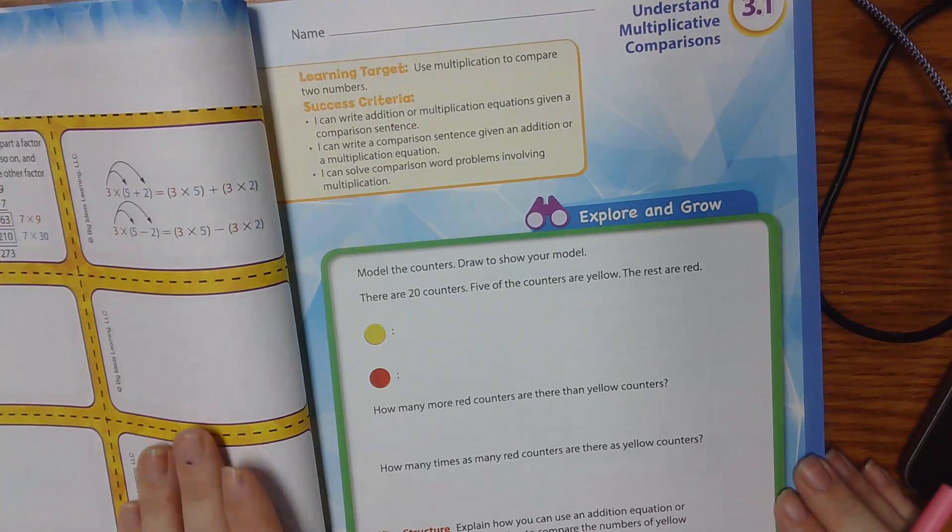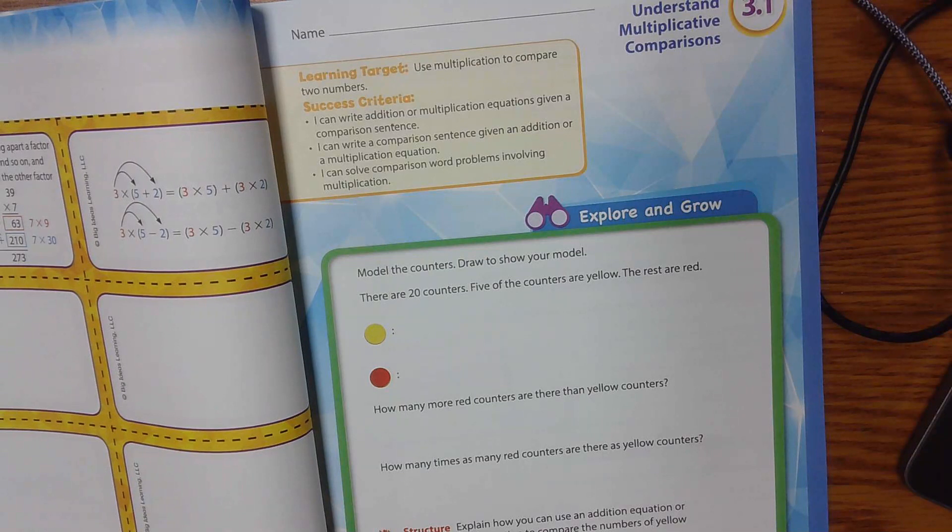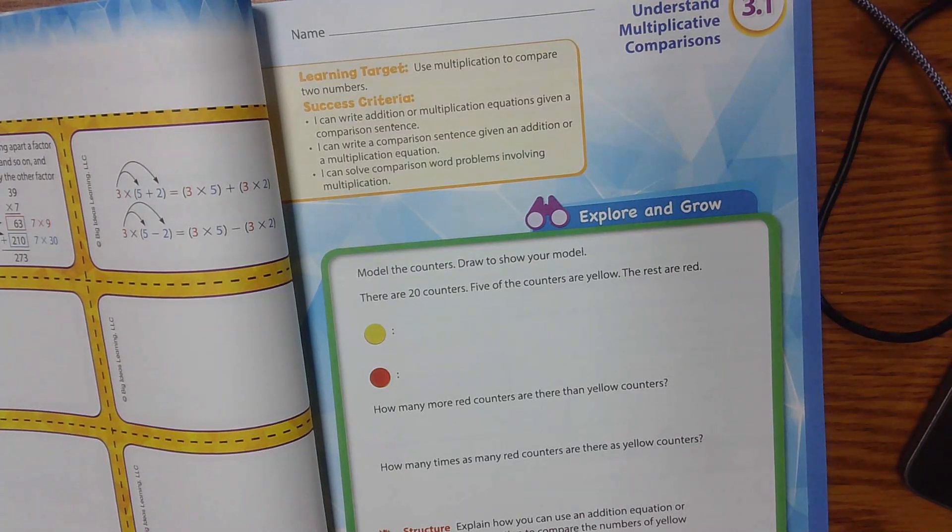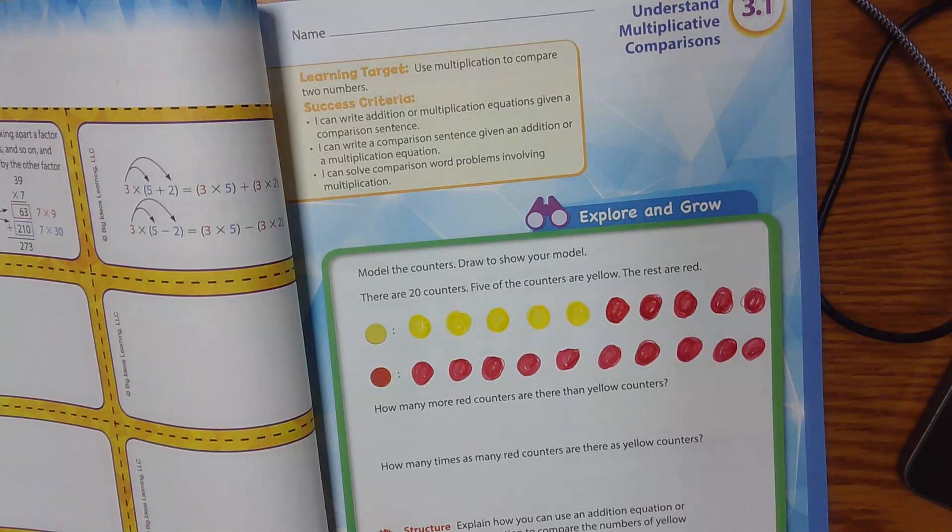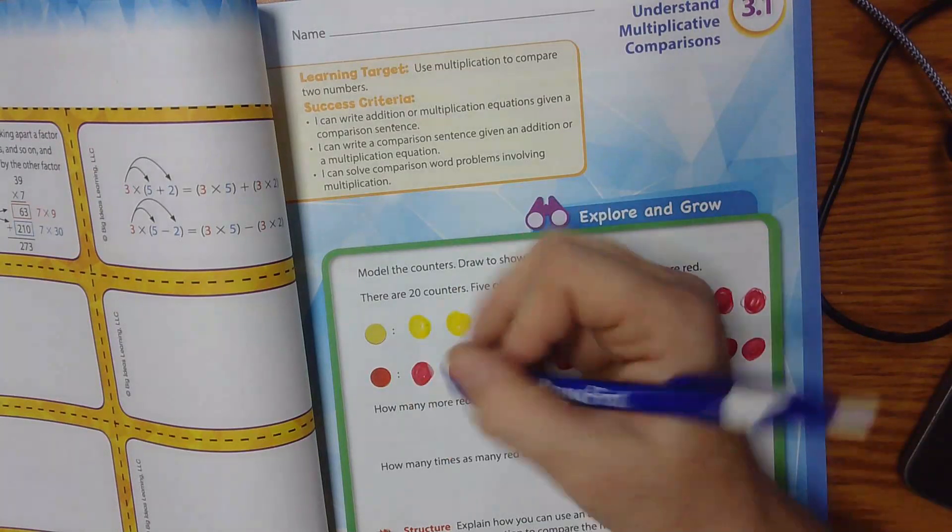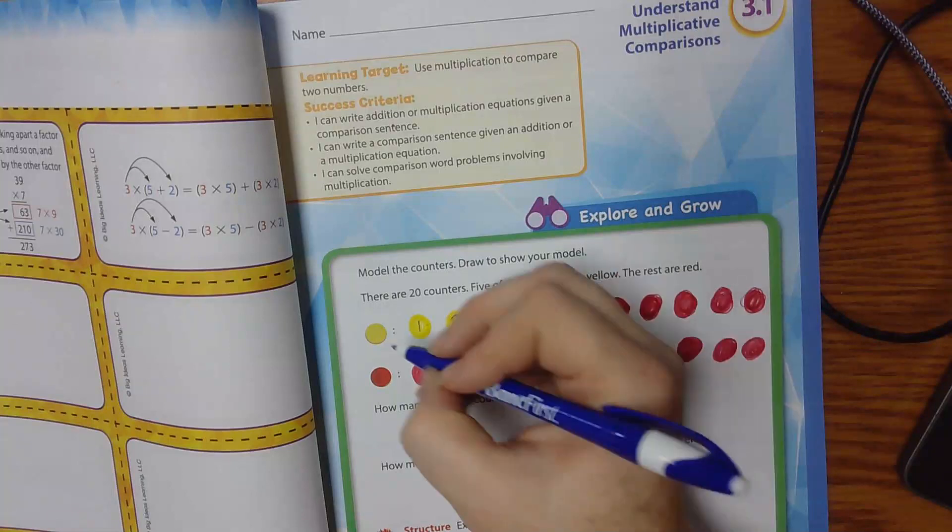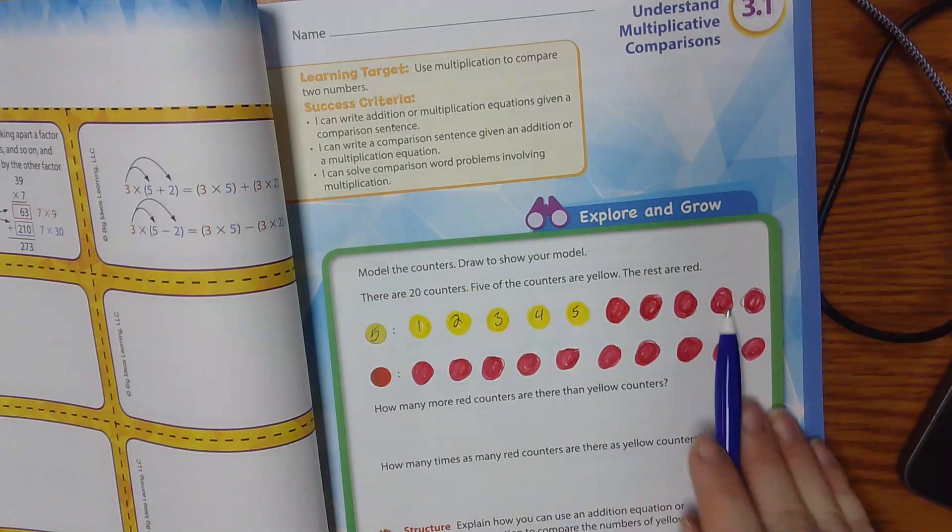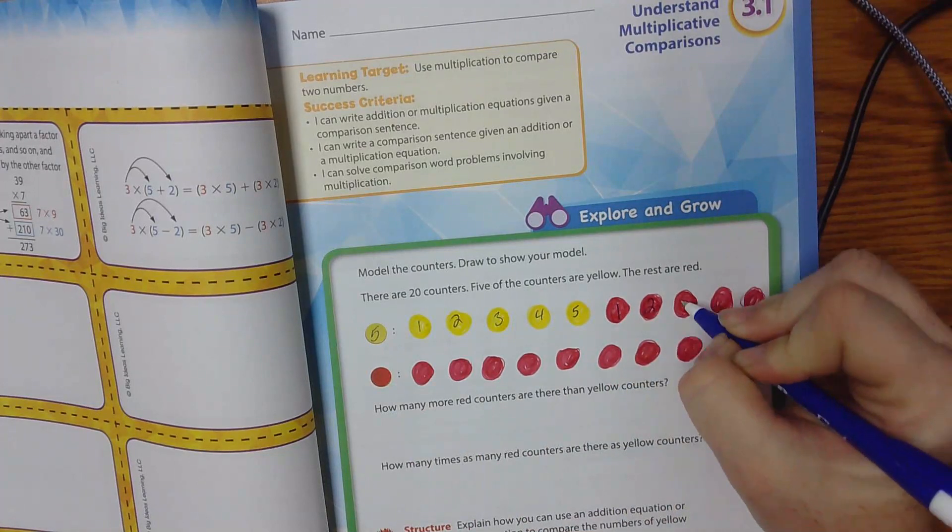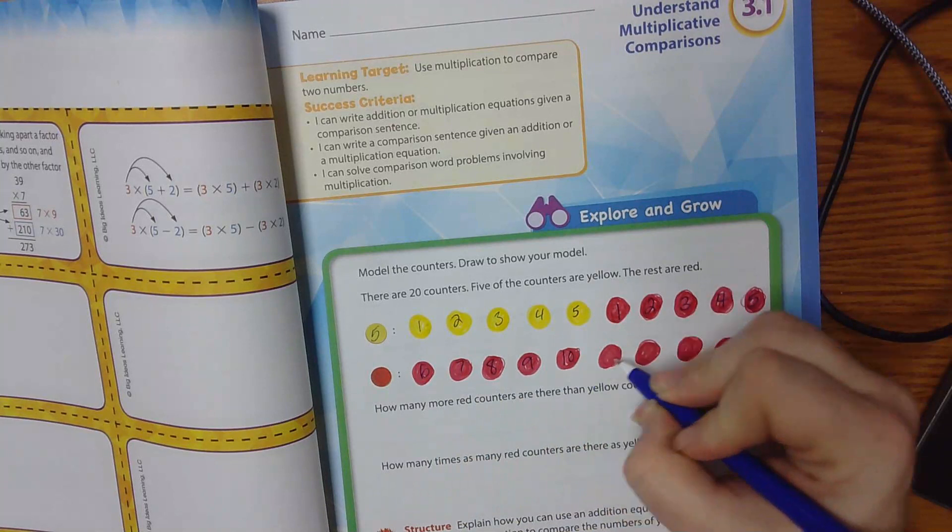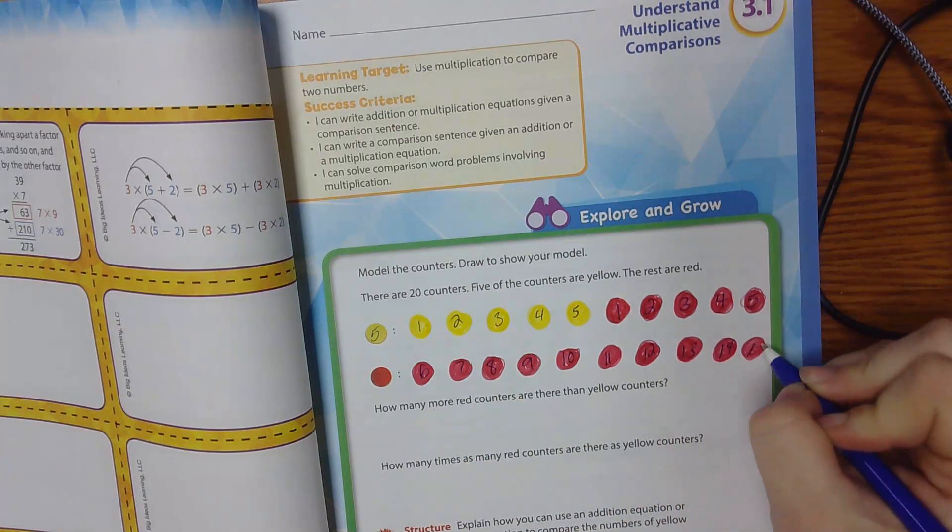We're going to model the counters and draw to show our model. There are 20 counters. Five of them are yellow, and the rest are red. So there are 20 counters, five are yellow and the rest are red. We have five yellow counters. All together we have 20. We have 20 all together, not 25, and then we have 15 red.